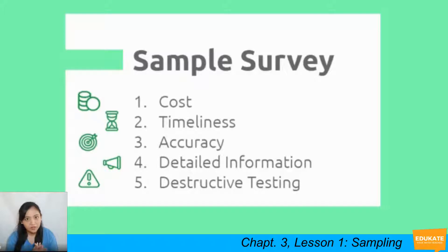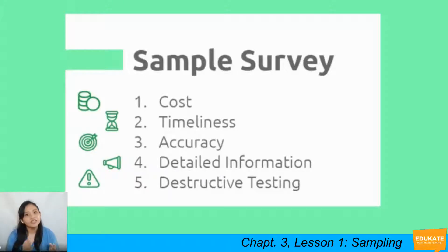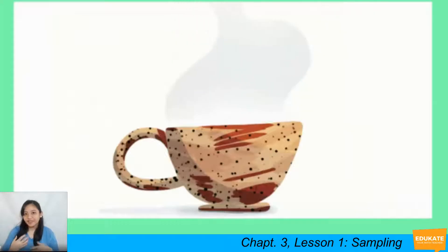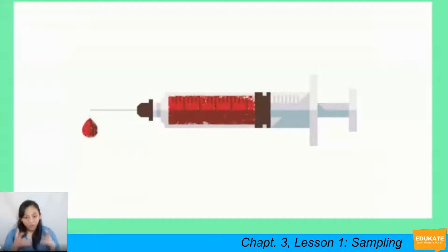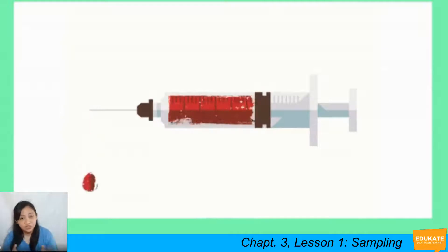The fifth reason we sample rather than use the whole population is destructive testing — when a test involves the destruction of an item. For example, battery life tests must use sampling because something must be left to send. Another example is testing the effectivity of a vaccine. If I gave you a cup of coffee, just a sip will help you determine if it tastes good — you don't need to finish the whole cup. Similarly, for blood testing, you don't need to take all the blood from a person just to check for immunodeficiencies or illness — a sample is enough.